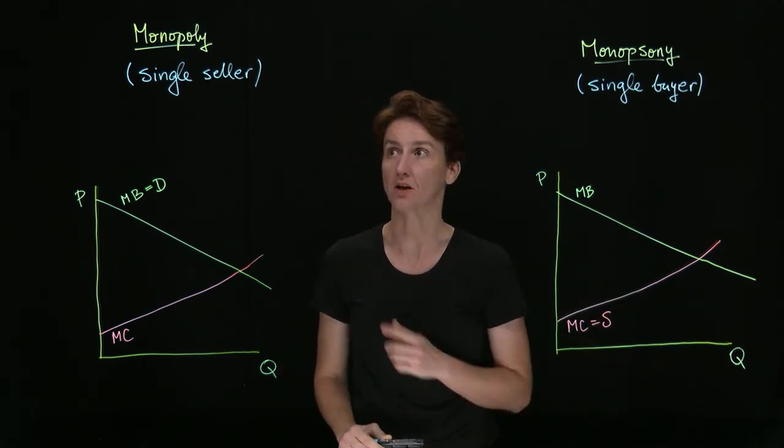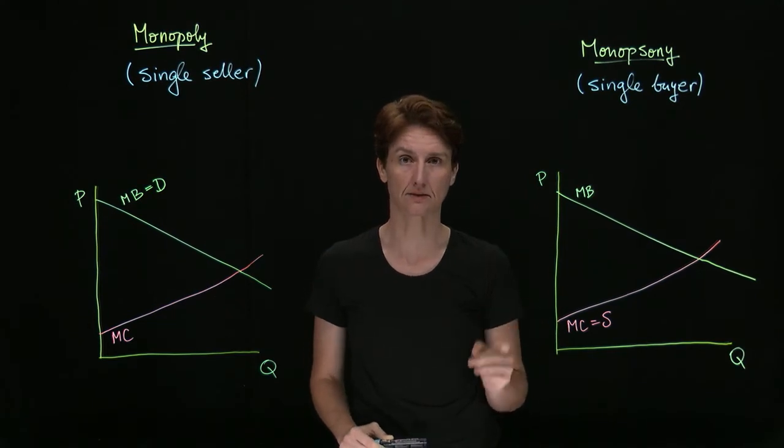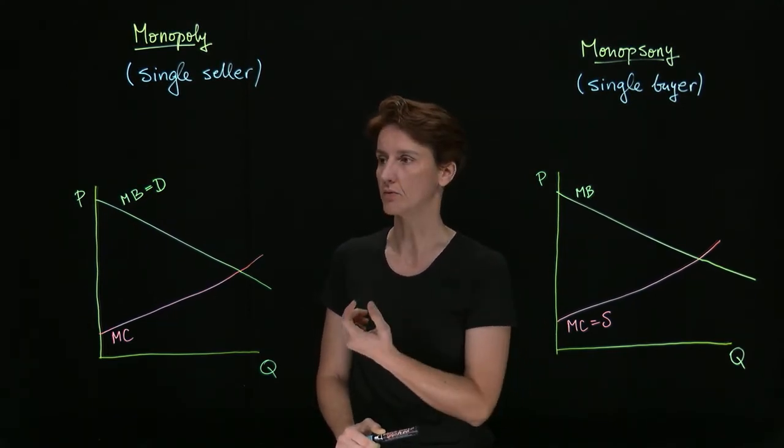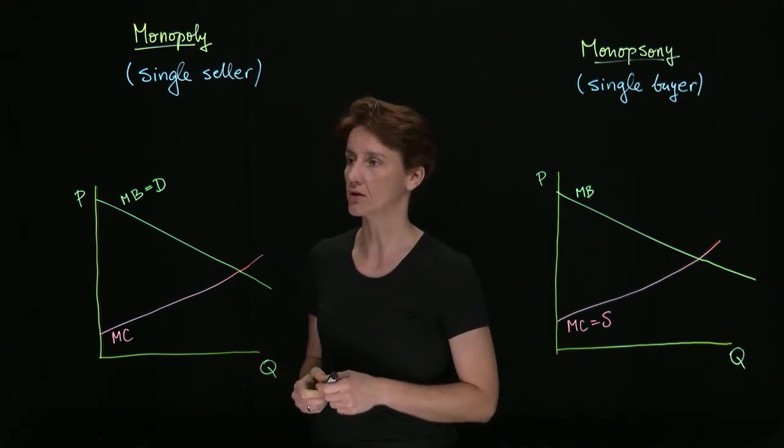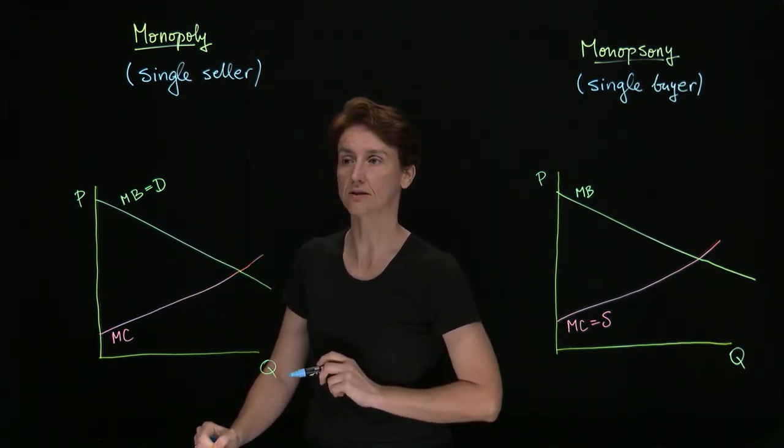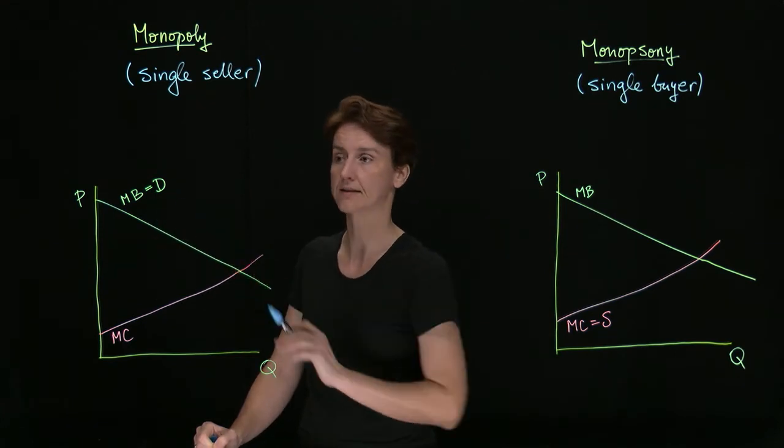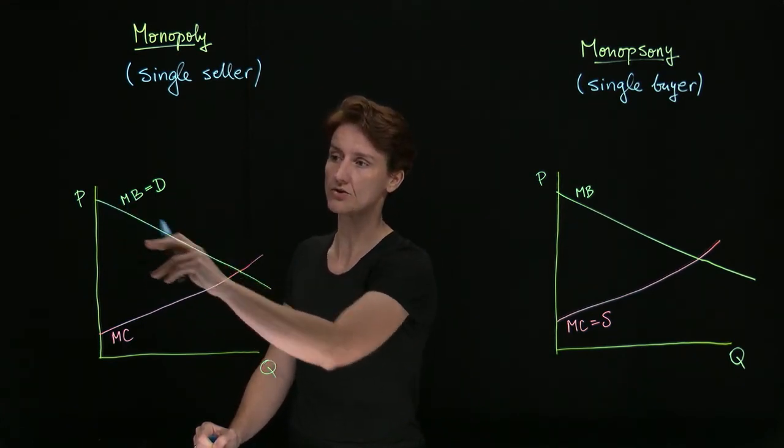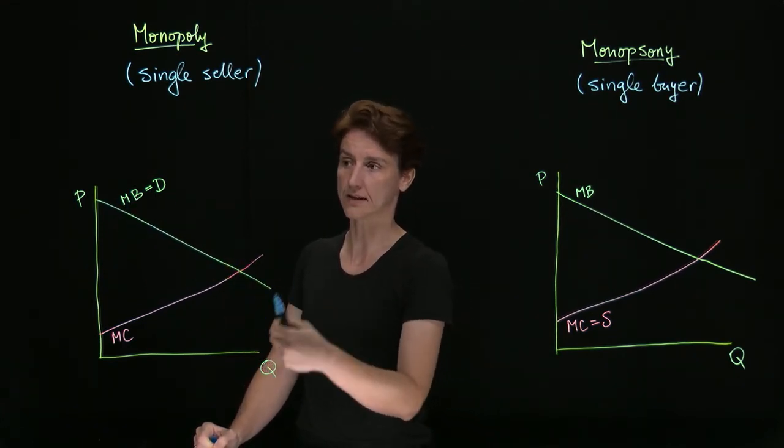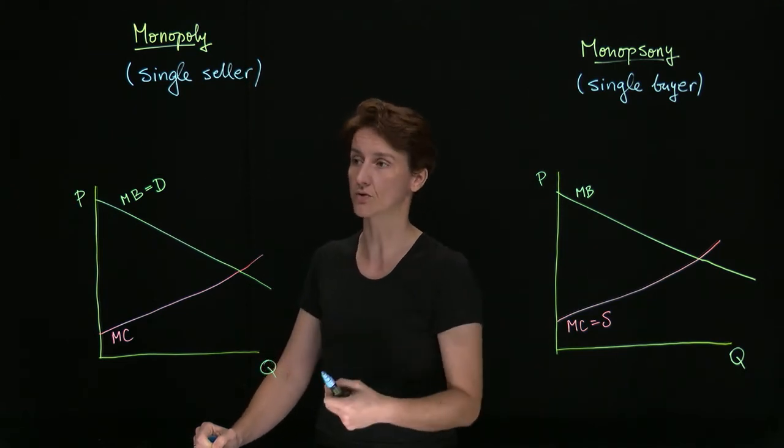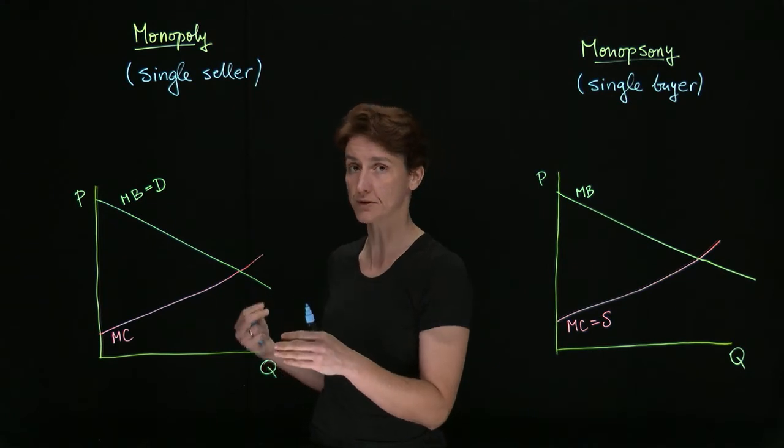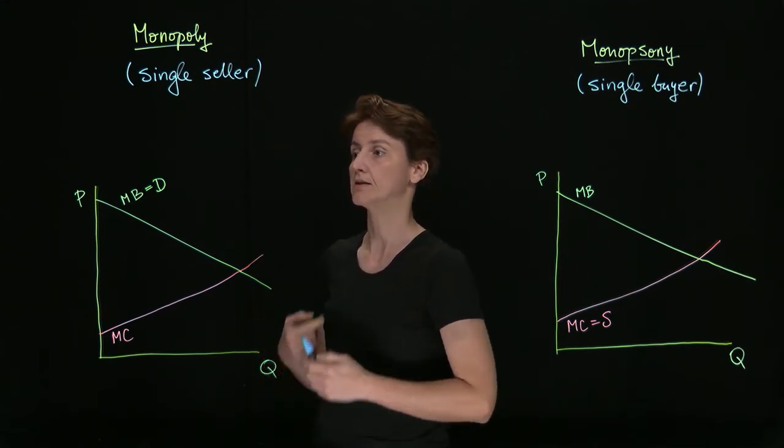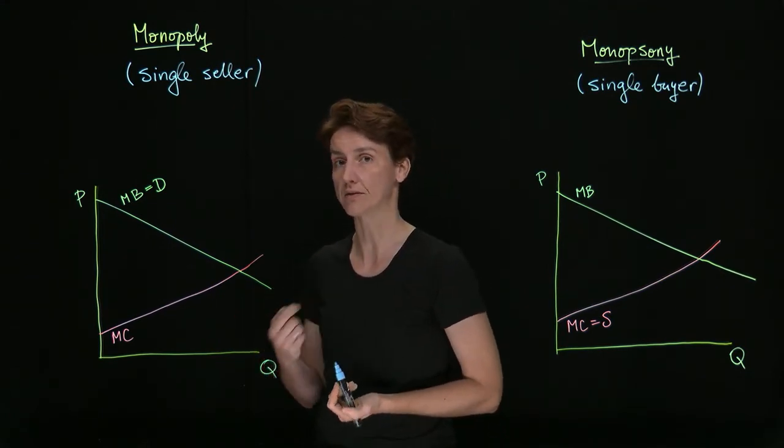To find the price that a monopolist or a monopsonist sets more precisely, we will want to break down their decision. For the monopolist, recall that every time they want to sell an extra unit, they have to lower the price. That's going to mean not just less revenue from the next unit, but also reduced revenue because they have to charge less on all of the previous units as well.